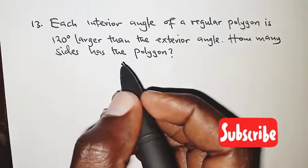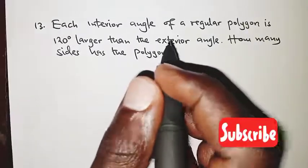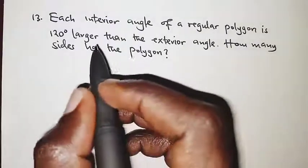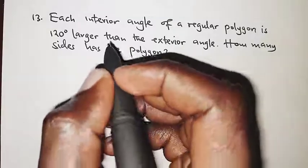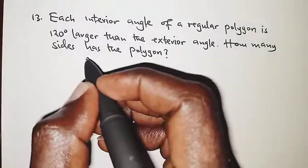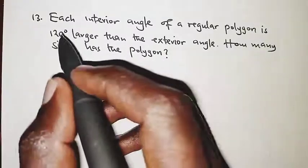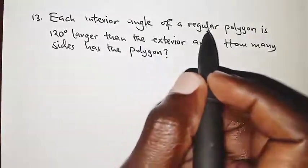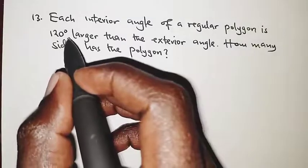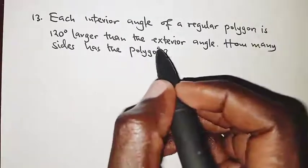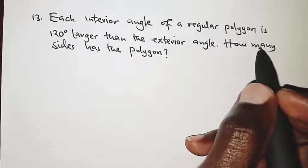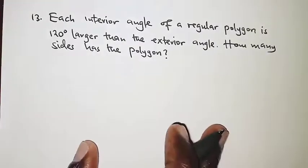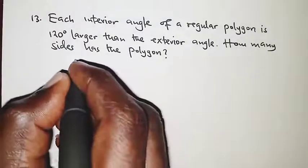Welcome. Today we are on question number 13, which is a question on angle properties of polygons. The question reads: each interior angle of a regular polygon is 120 degrees larger than the exterior angle. How many sides has the polygon?